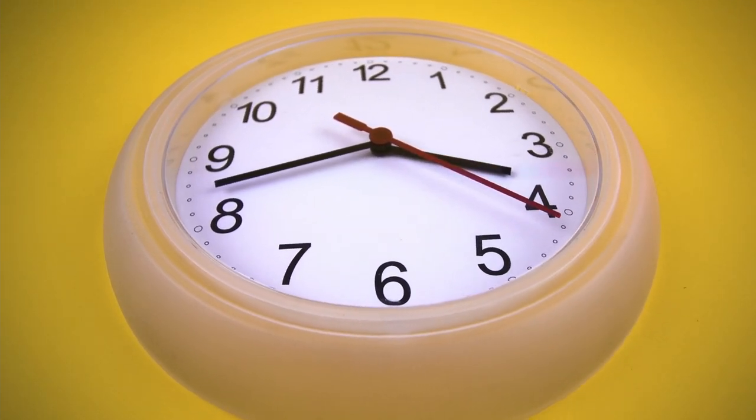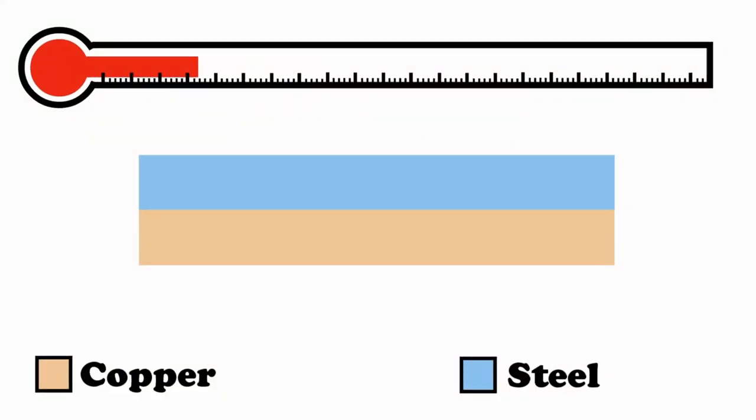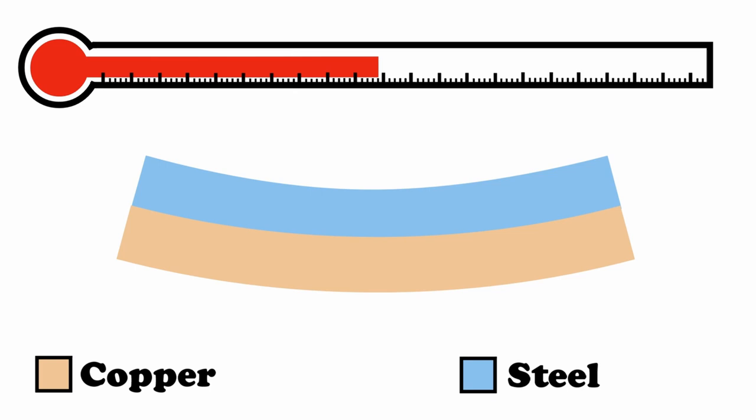Older, cheaper toasters use bi-metallic strips as the timer. As the name suggests, the bi-metallic strips contain two different types of metal, usually steel on one side and copper on the other. These metals have different thermal characteristics so act differently when subject to heat. The copper side expands quicker than the steel when heated, this causes the strip to bend.